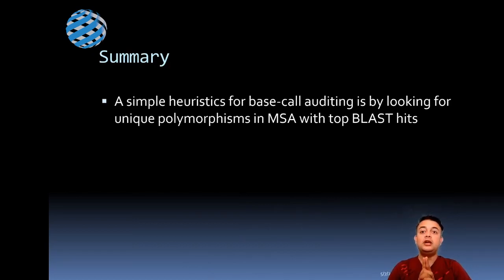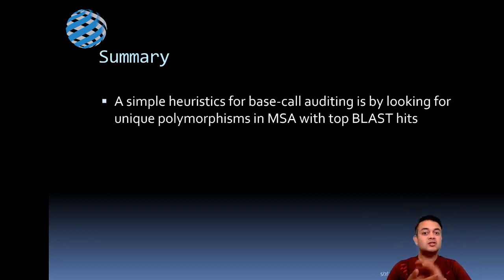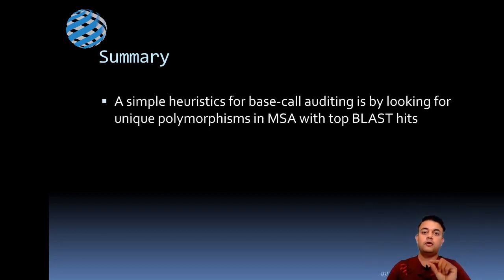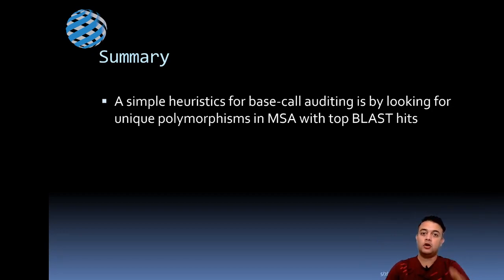In summary, a simple heuristic for base call auditing is to look for unique polymorphisms in a multiple sequence alignment with the top BLAST hits. First perform a BLAST search, align the results, look for unique polymorphisms, and then manually audit only those positions for base call verification. This approach saves a great deal of time.